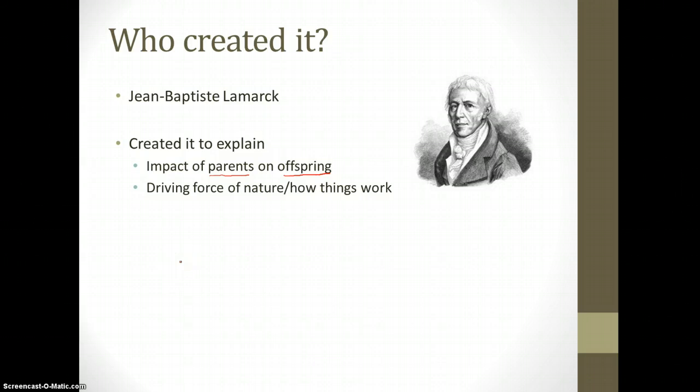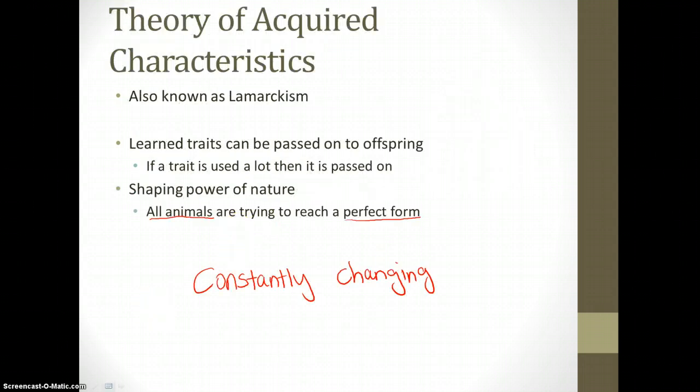He created this theory known as theory of acquired characteristics to explain how parents have an impact on offspring, to explain how some traits are passed on from parents to offspring. And he is also trying to explain the driving force of nature, what impact does nature have on us and simply how do things work on this planet. So he created this theory of acquired characteristics and it is also known as Lamarckism because of his name Lamarck.